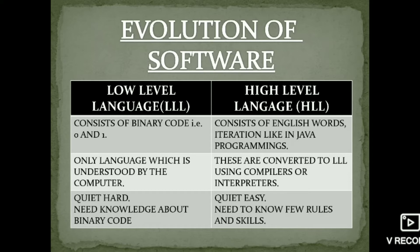Now let's come to the evolution of software. As mentioned, software consists of programming language. The computer understands only binary code — that is, zeros and ones. It is quite hard to work with, and it requires knowledge of binary code. This is called low-level language.